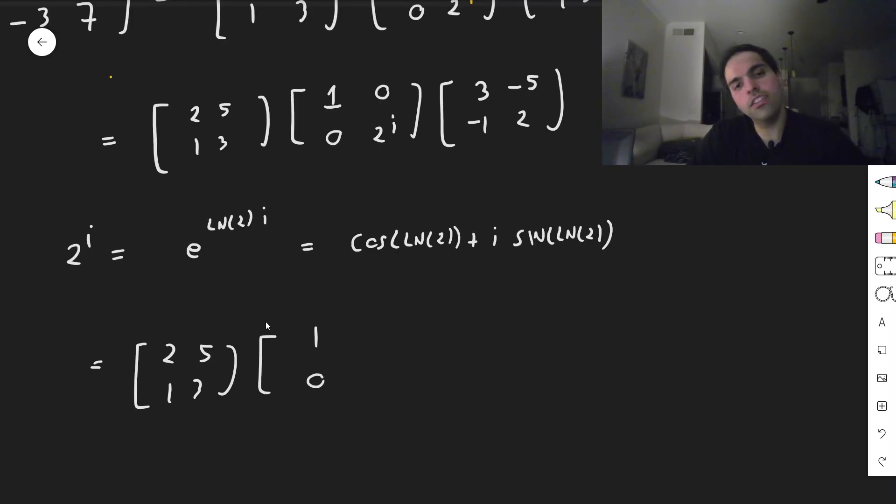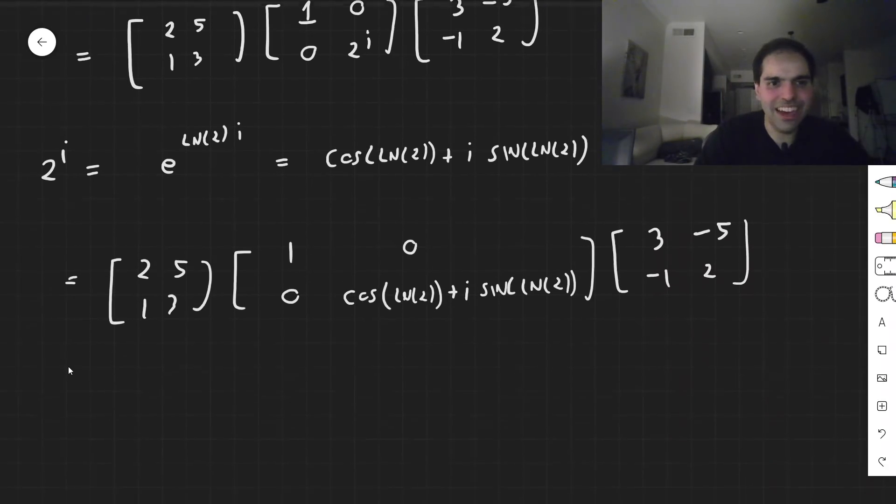Cosine of ln of 2 plus i sine of ln of 2. It's a sign for you to continue watching this. 3 minus 5 minus 1, 2, and then you expand this out.